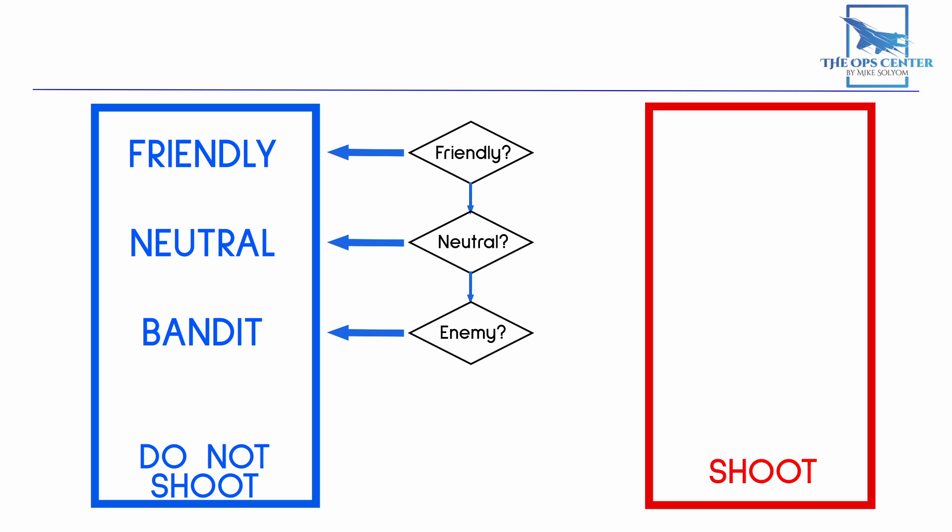Once you can answer the following questions, then you can turn the bandit into a hostile and move it into the shoot column.